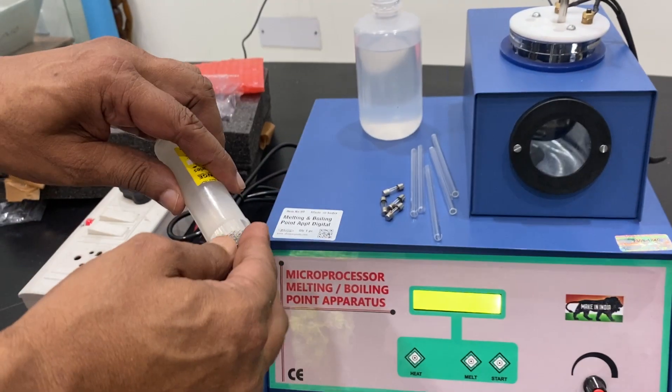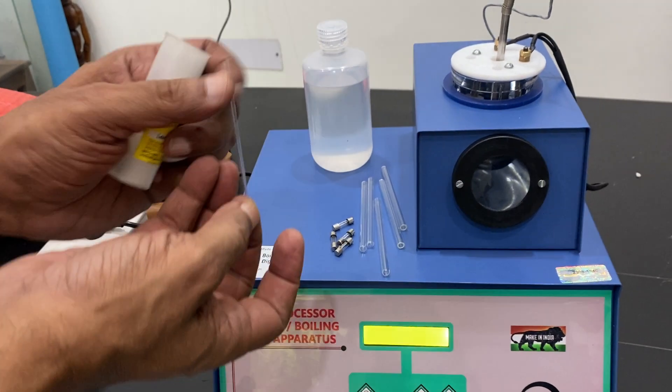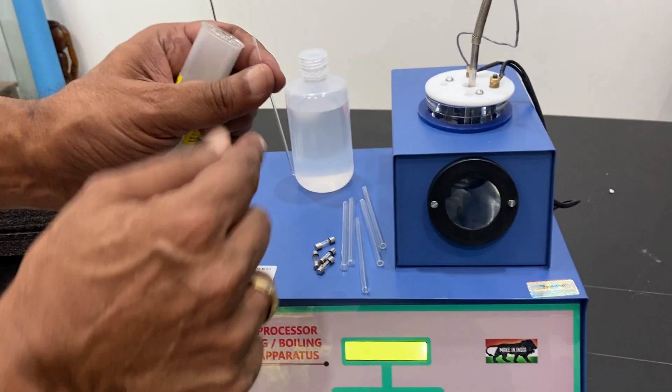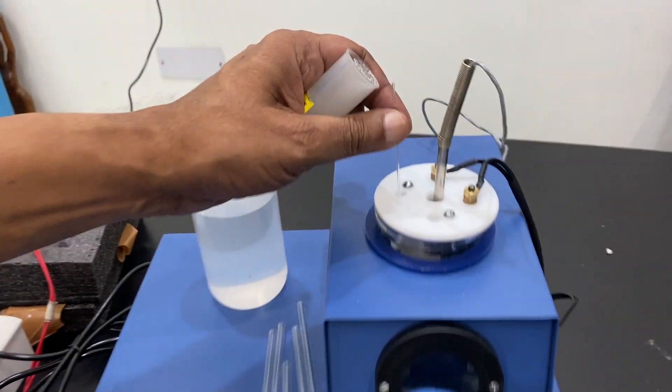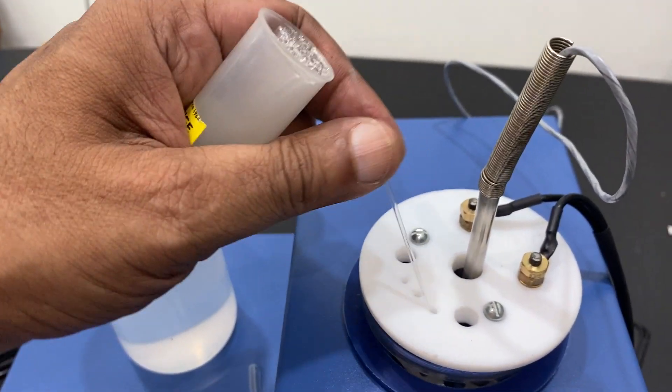You can see these are melting point and boiling point tubes. It has a capillary tube which is to be filled. If it is a powder, you have to fill it this way. Close it, fill it inside, and put it in the capillary holes. There are three capillary holes here: one, two, three.